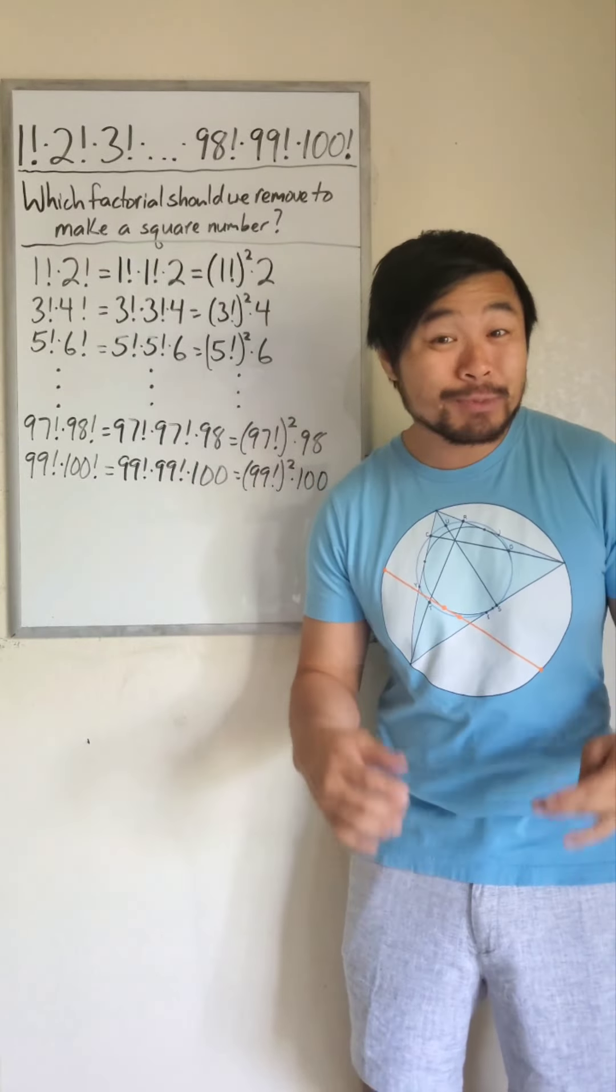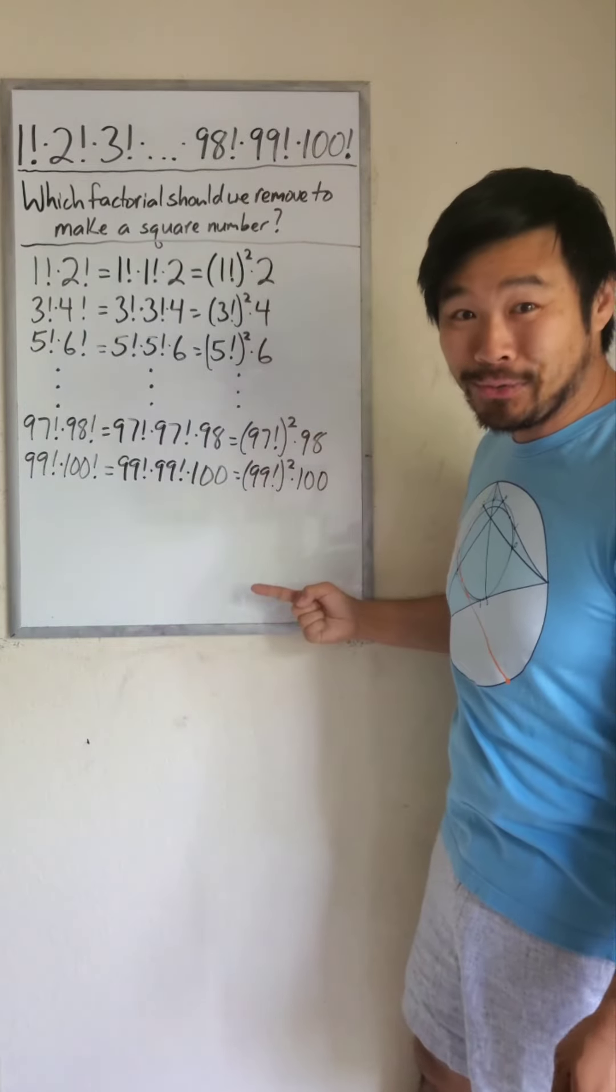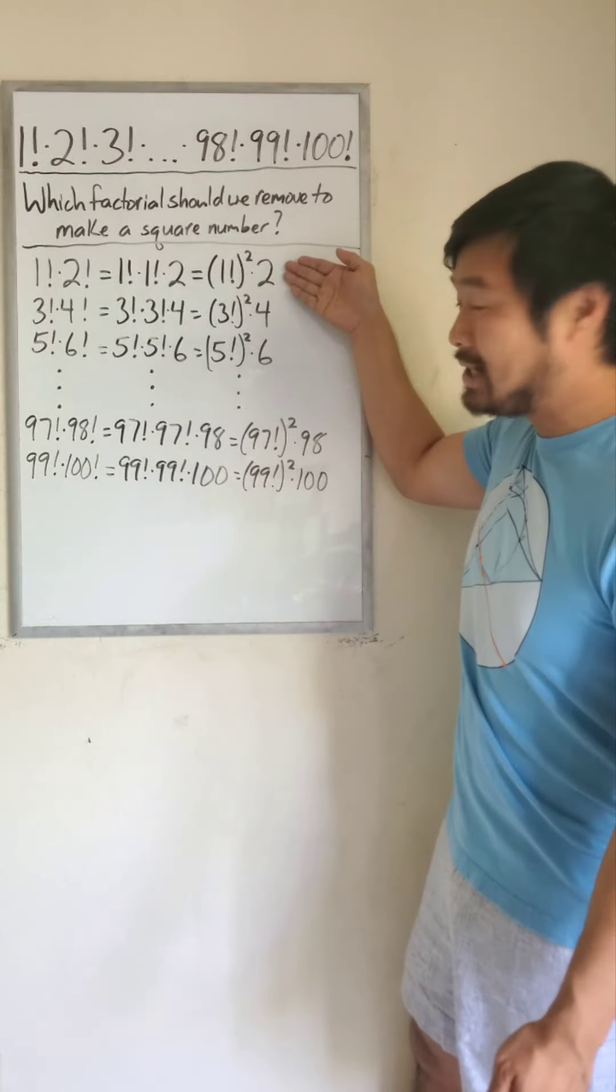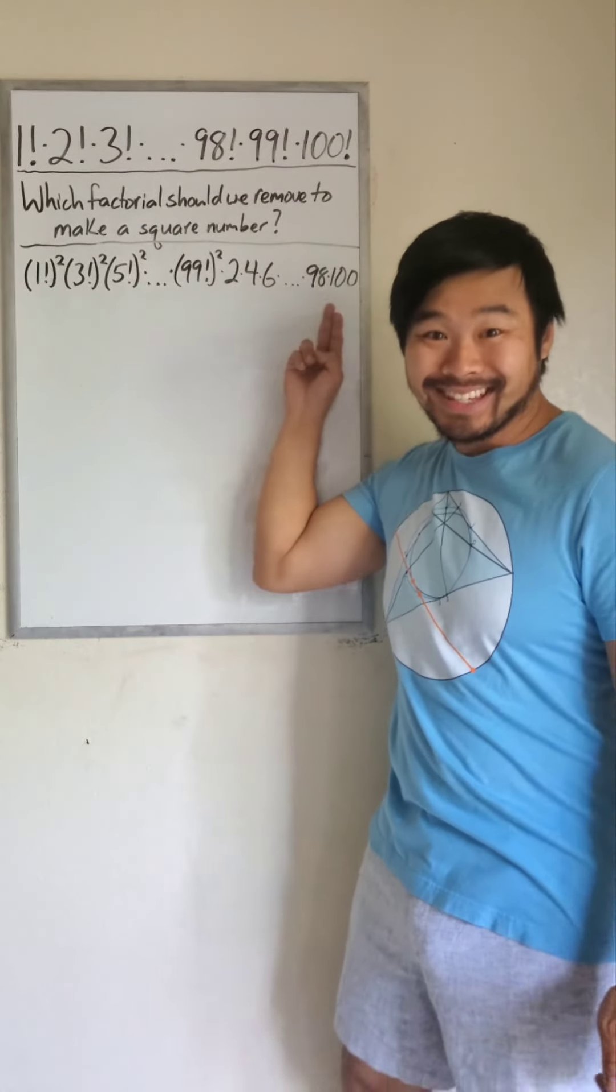Now, the reason why we did that is because we have square numbers now. We have 1 factorial squared, 3 factorial squared, and so forth. And we also have the even numbers from 2 to 100. So we can rewrite this problem like this.